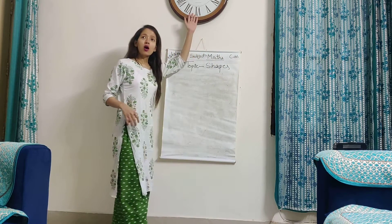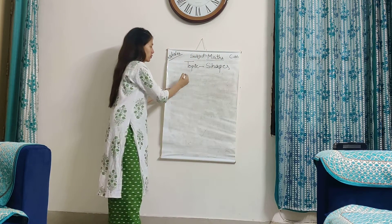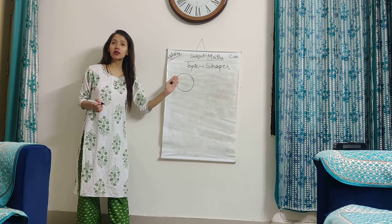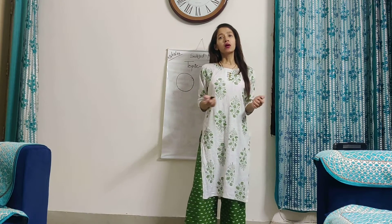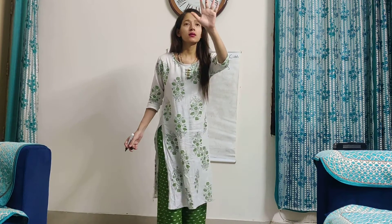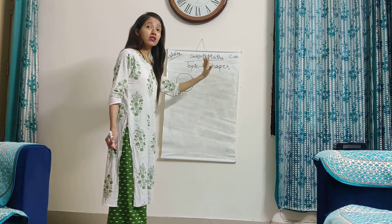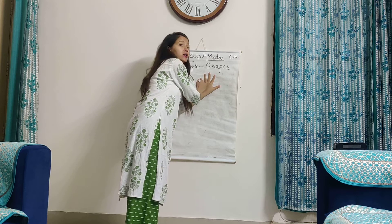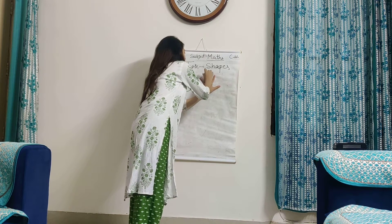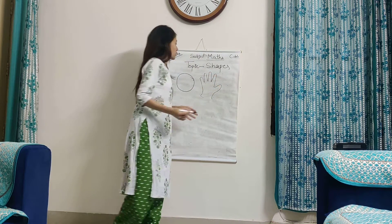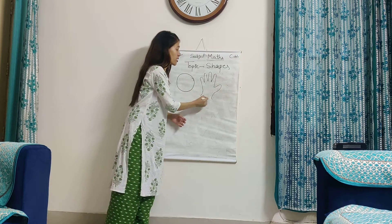Can you see this clock? So if I want to draw this clock, basically this is the outer boundary of this object. Basically the outer boundary of an object is nothing but its shape. For example, what is this? This is my hand, palm. So if I want to know the shape of this hand or palm, I will draw the outer boundary. So this is the shape of my hand.